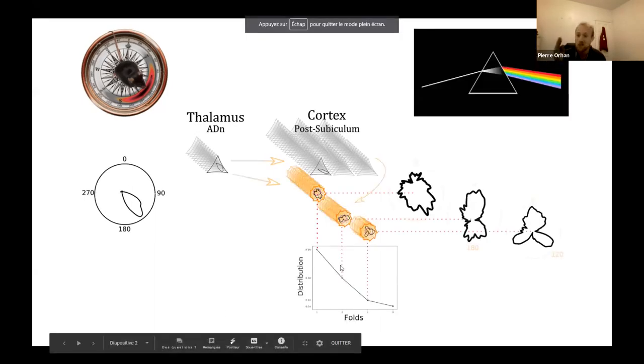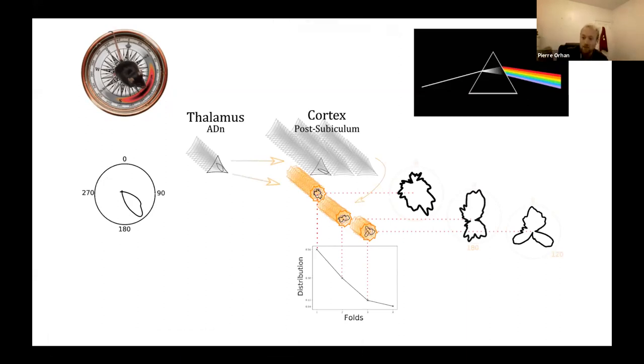All right, but surprisingly, we observe that inhibitory cells of the fast-spiking types, inhibitory interneurons, present striking symmetry in their tuning curves. We observe one-fold, two-fold, and even three-folded tuning curves. It's as if it had extracted the harmonics of the input signal, as if the system was a prism here.